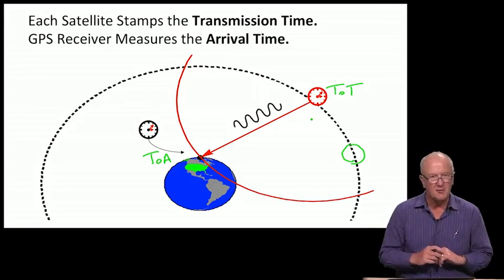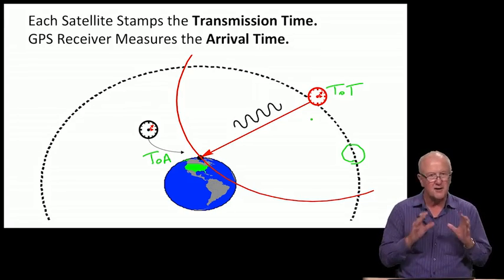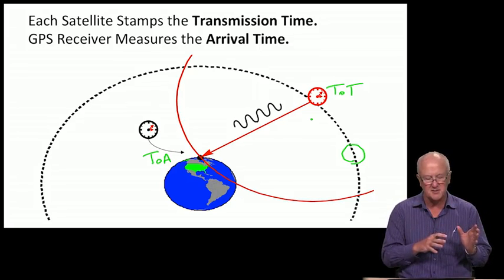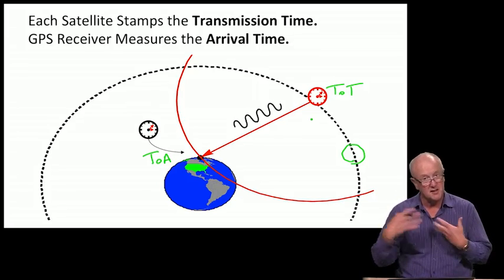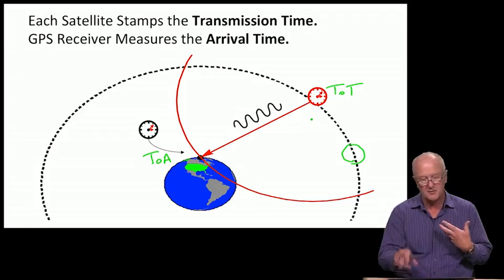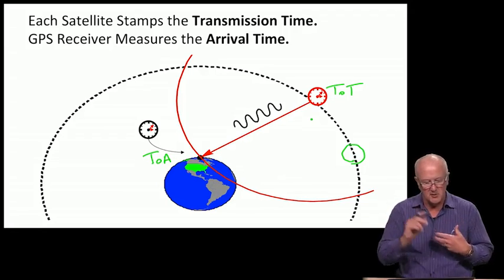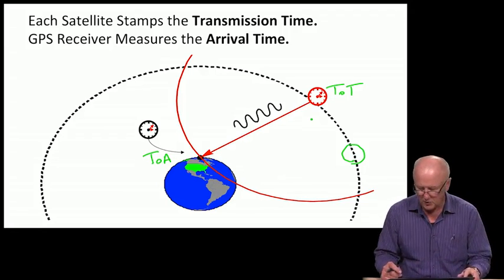But the time of arrival belongs to the very inexpensive clock in the GPS receiver, and so it will be biased, offset, relative to satellite time. But we're getting ahead of the story.